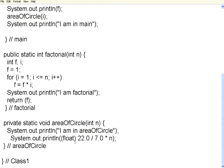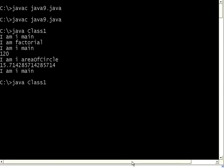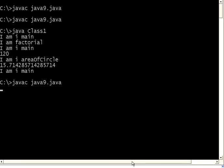I made a mistake — I wrote pi which is 22 by 7, star n. Actually, area of circle is pi times r squared. Also, if you see, I am using something called float within brackets — this is called typecasting. If you explicitly put a data type within brackets, that is called typecasting in Java. Let me compile it and run it again.